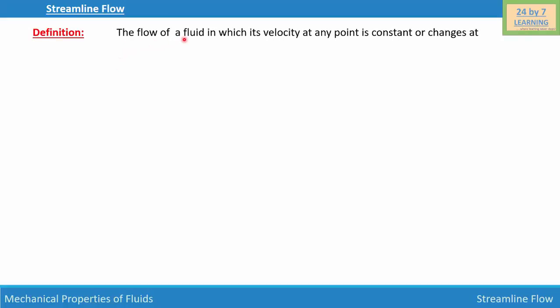Streamline flow is the flow of a fluid in which its velocity at any point is constant or changes at regular manner. Then that flow of fluid is known as streamlined flow.